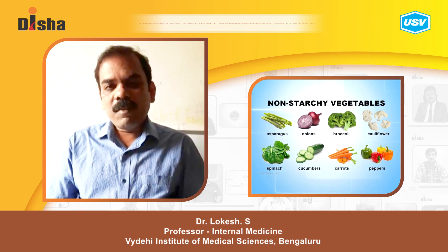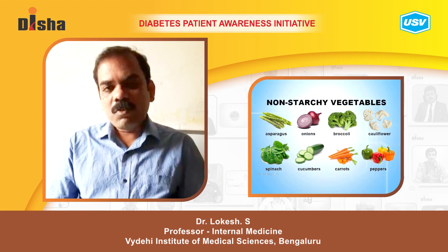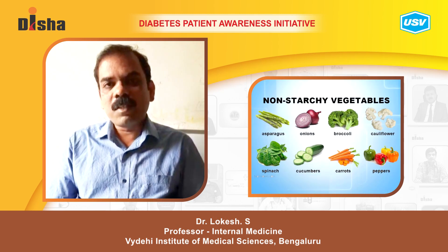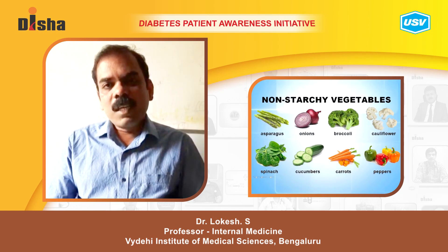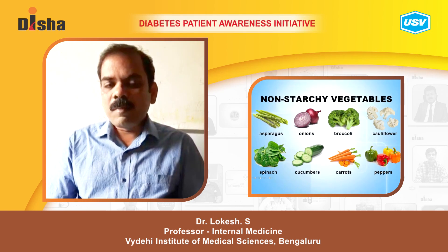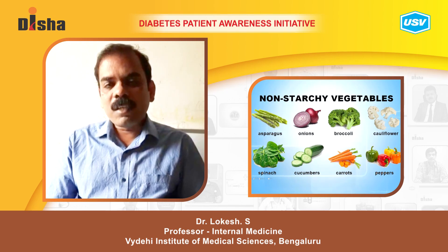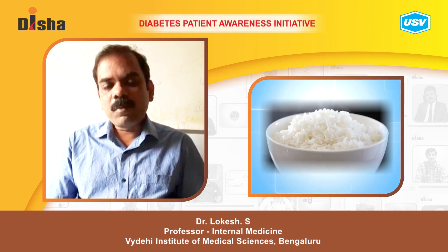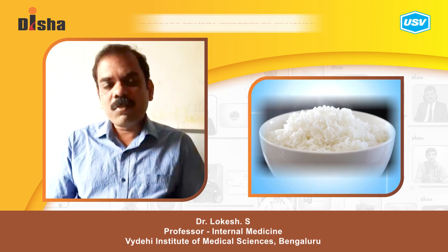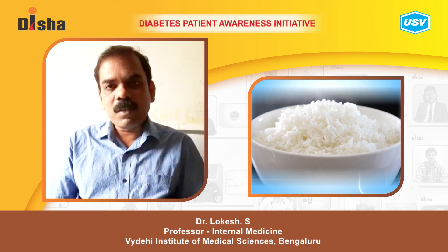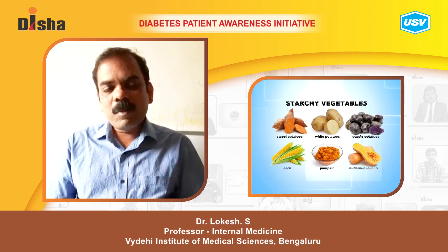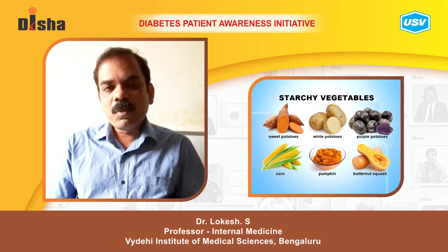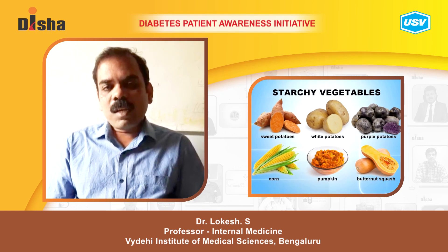The third rule is to eat healthy — have foods which contain low sugars in the form of vegetables. Load yourself with a lot of vegetables, for example broccoli, beans, carrot, and so on. Apart from that, avoid fried food and processed food. Choose unprocessed food. Brown rice is preferable, and roots and tubers such as beetroot should be avoided.